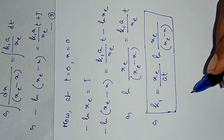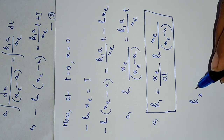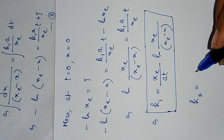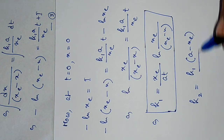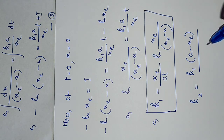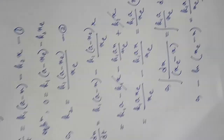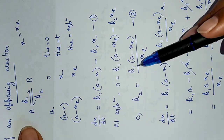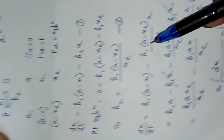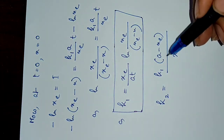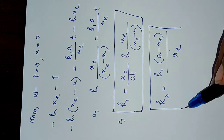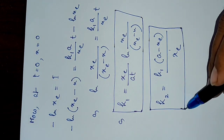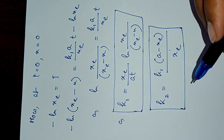From the earlier derivation (equation 2), k2 = k1·(a - x_e)/x_e. Substituting the value of k1 into this expression gives us k2. This is the alternative method to determine the values of both rate constants for an opposing reaction.